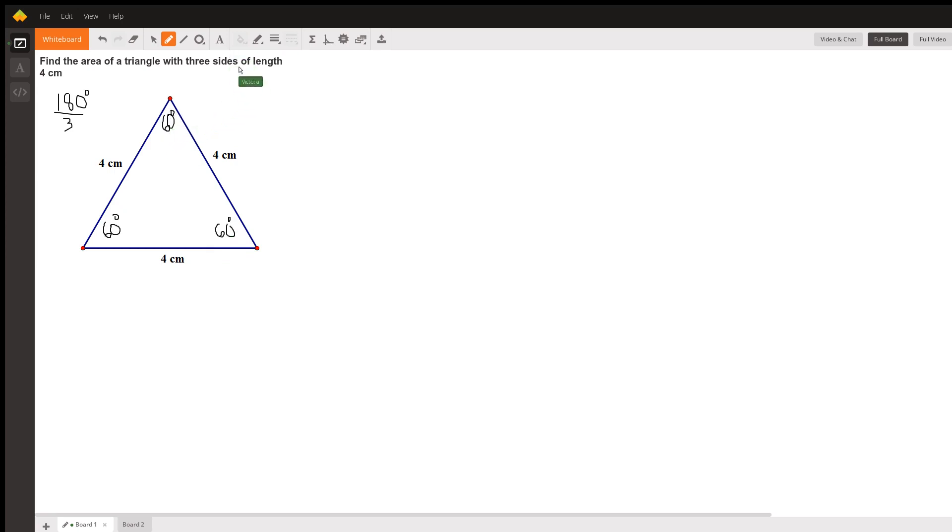Now, to find the area of a triangle, we know that it's one-half the base of the triangle times the height of the triangle. So for us, that would be one-half, our base is four, but we're struggling to find the height, because it would be this line right here.